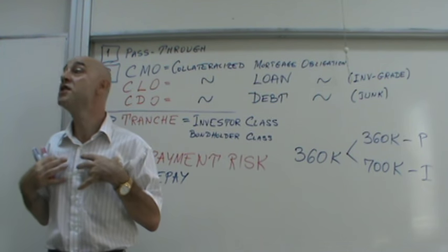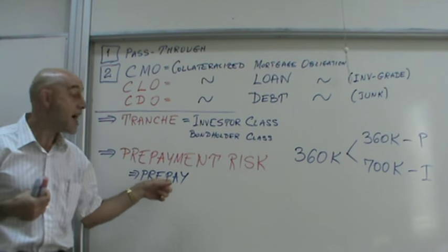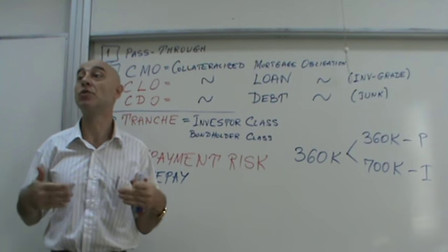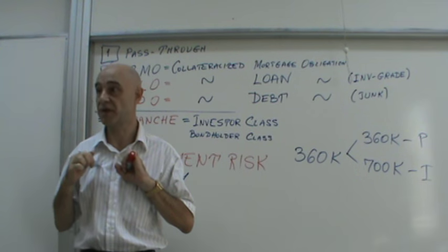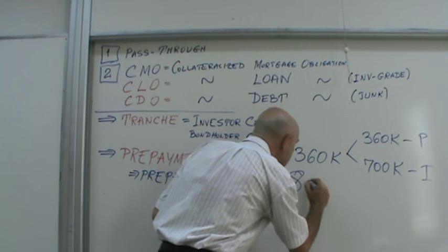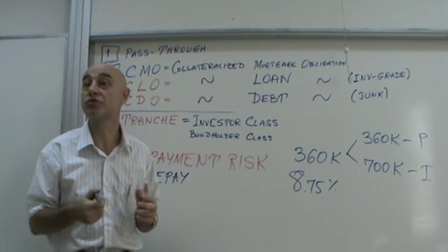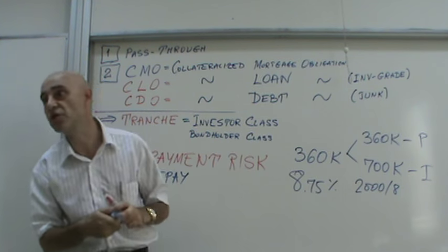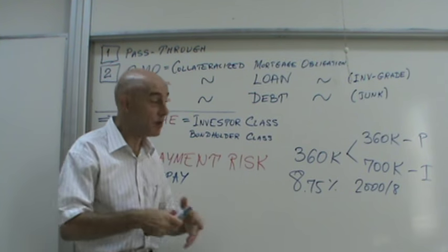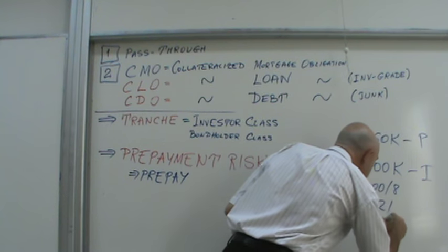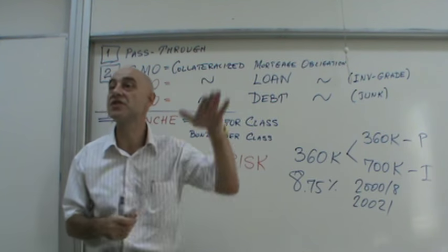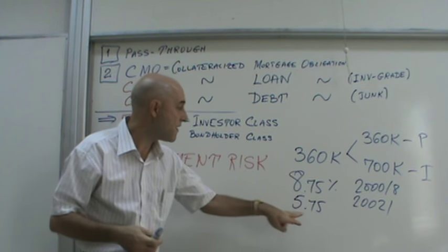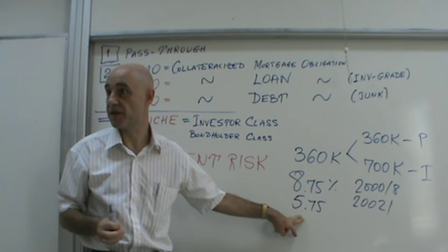Prepayment is an important legal right, and it's especially financially beneficial when you borrowed at a high interest rate. For example, I borrowed at 8.75% around the year 2000. By 2002, the US economy had crashed and interest rates had fallen significantly, so I was able to refinance at 5.75%.